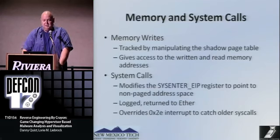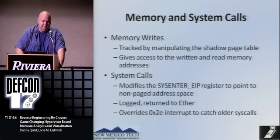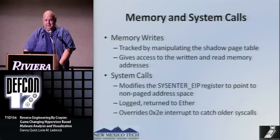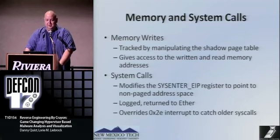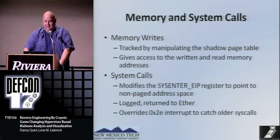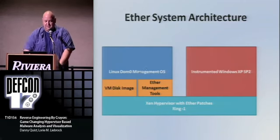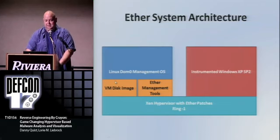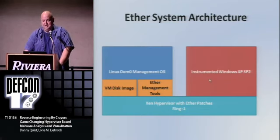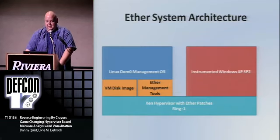Memory writes are checked by manipulating the shadow page table, giving access to all memory read and written. System calls are monitored by modifying the SYSENTER EIP register to point to a non-paged address — whenever any access hits that, Ether logs it. It also logs the int 2E instruction to catch older system calls. The architecture has a Linux Dom0 management system running your tools, with the VM disk image and Ether management tools, working with the Xen hypervisor with Ether patches, and an instrumented Windows XP SP2 guest.